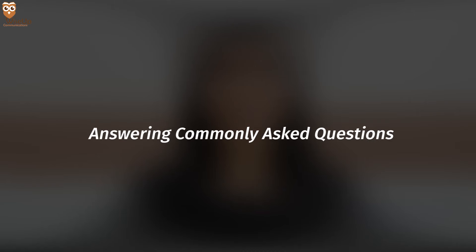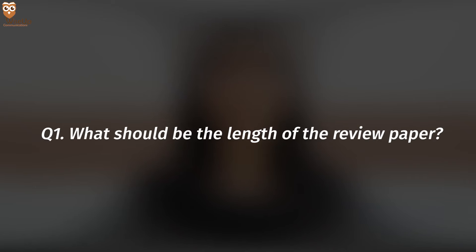Now for some commonly asked questions. First: what should be the length of the review paper? It depends on the topic, but on average the length can vary anywhere from 7 to 8 pages to even 20 to 30 pages. You will get a better sense when you read many review papers in your field of interest, and then decide on the appropriate length.